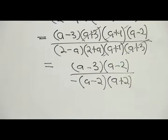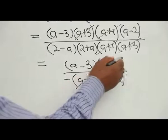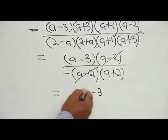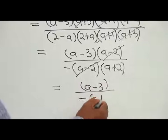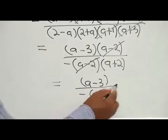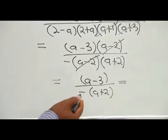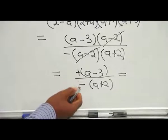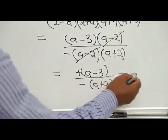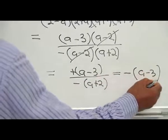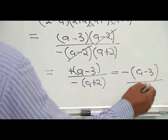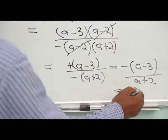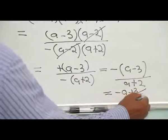We are left with A minus 3 in the numerator and A minus 2 divided by 2 minus A in the denominator. We can write 2 minus A as minus(A minus 2), so A minus 2 cancels with A minus 2, leaving A minus 3 all over minus(A plus 2). Since we don't allow a negative sign at the denominator, positive divided by minus gives minus, so we write this as minus(A minus 3) over (A plus 2).